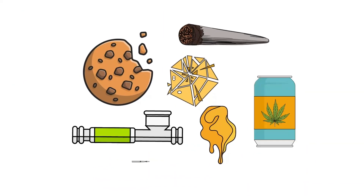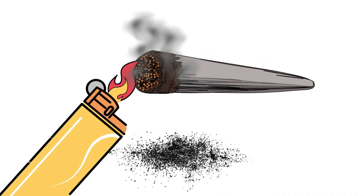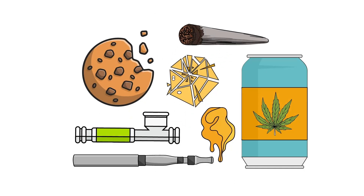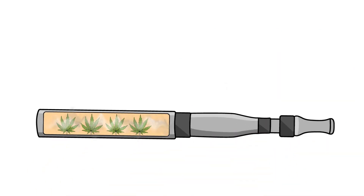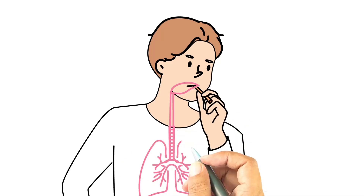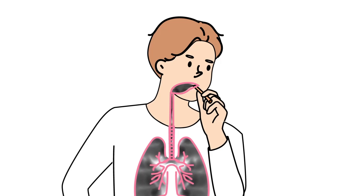Route matters. Every method of cannabis consumption has drawbacks. However, smoking cannabis has been shown to be the most harmful consumption method. If a person enjoys inhaling their products, purchasing a high-quality vaporizer will reduce risk by heating the plant to the point that it releases vapors containing desired cannabinoids without burning it. For persons who do smoke their products, it is important to know that the risk is further amplified with deep inhalation. If smoking, avoid taking a deep breath and holding in the smoke, as this disproportionately increases the intake of toxic material into the lungs.